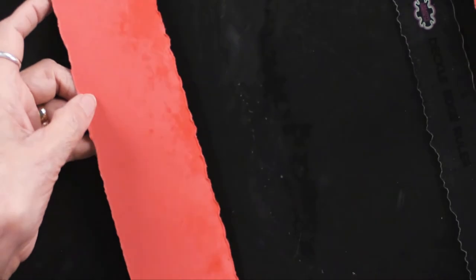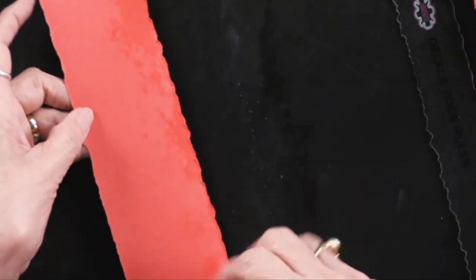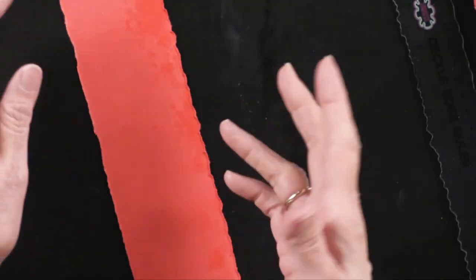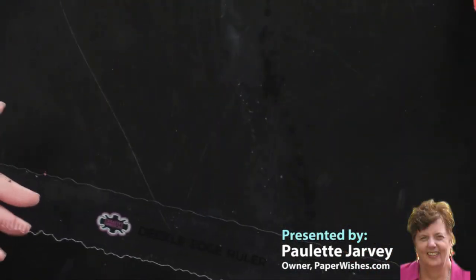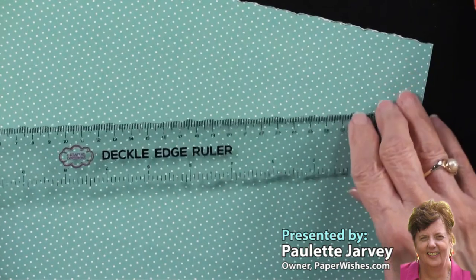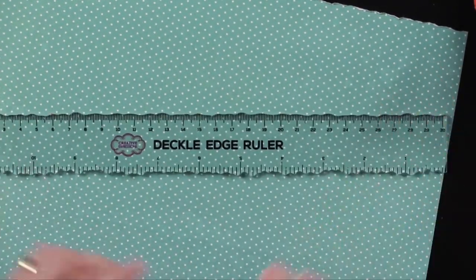And then I would do the same thing on the other. So if you missed it, go ahead, mist it, then go ahead and do your deckling. Let it dry, and it will dry in just a moment. So that's what's going on. So these are some things that you can do with your deckle edge ruler. I thought you'd want to know.